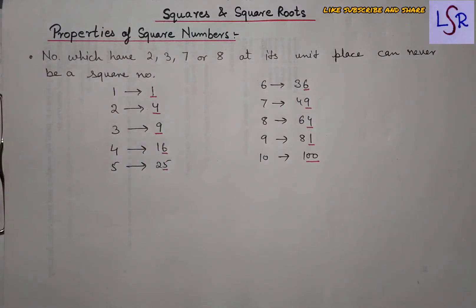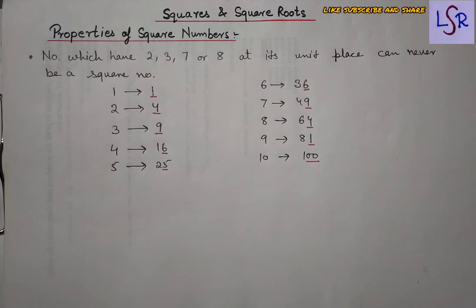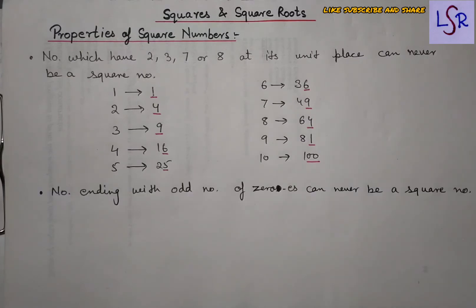We are not getting 2, 3, 7, or 8 anywhere as a unit digit. Hence, whenever we get these four digits at the unit place, that number can't be a perfect square. The next property is: the number ending with an odd number of zeros can never be a square number.